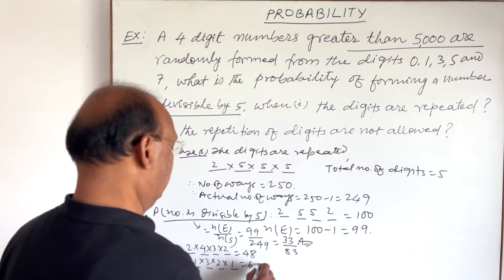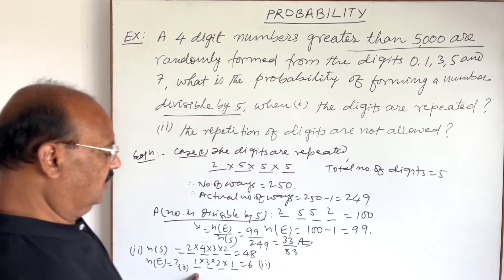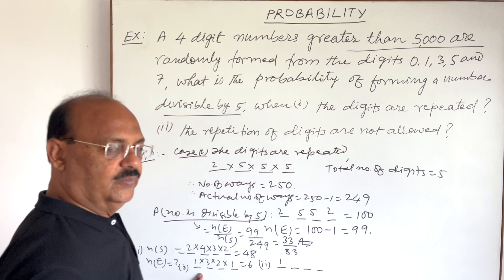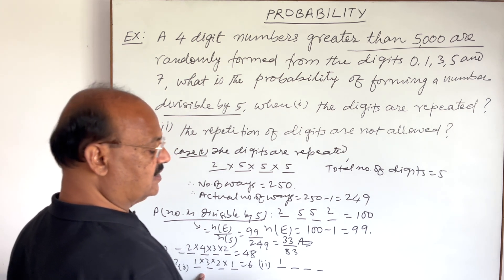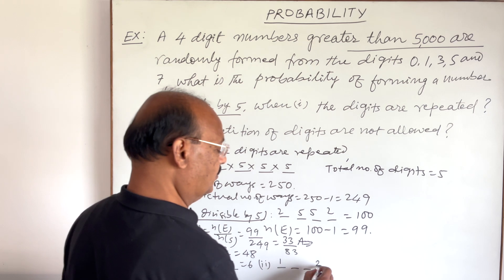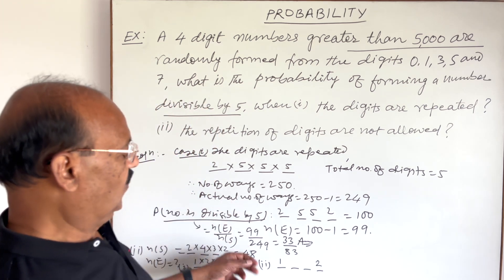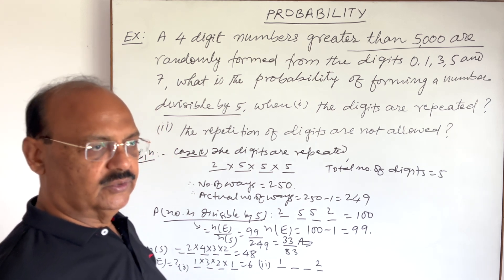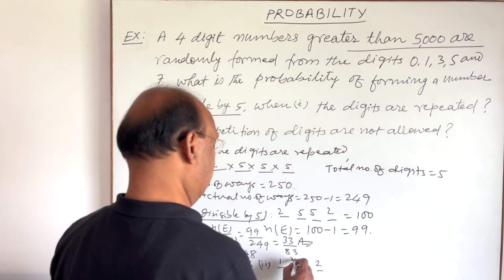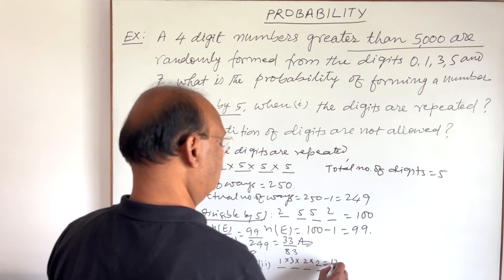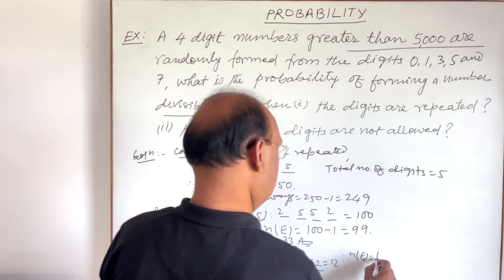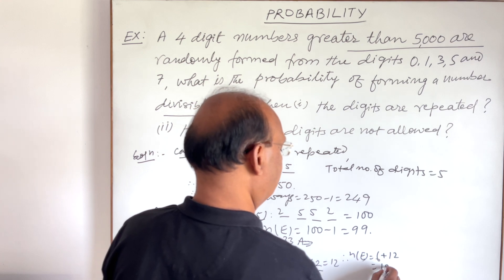Sub-case two: thousands place is filled with 7. The units place can now be 0 or 5 for divisibility by 5, giving 2 options. Two digits are utilized, so the hundreds place has 3 remaining options and the tens place has 2. This gives 1 × 2 × 3 × 2 = 12. In total, n(E) = 6 + 12 = 18.